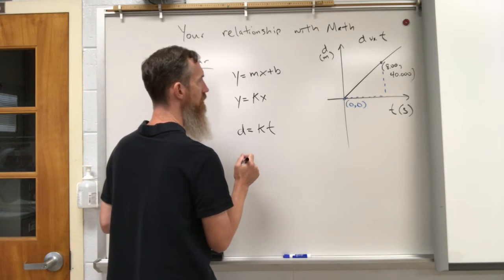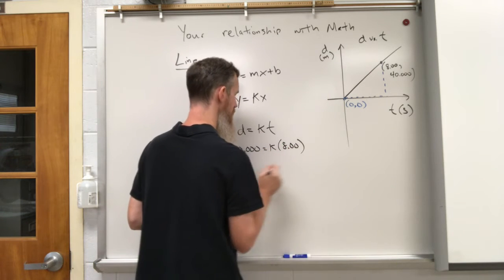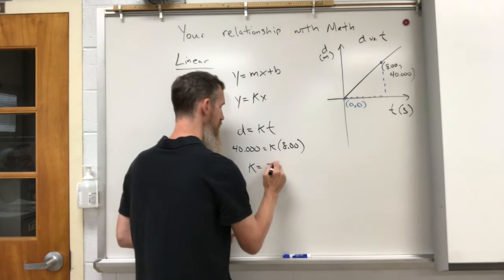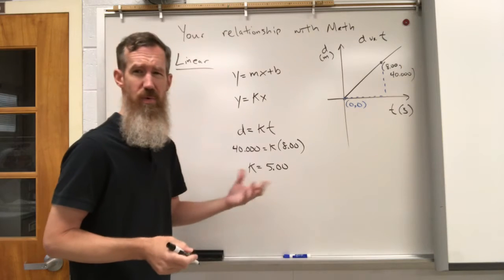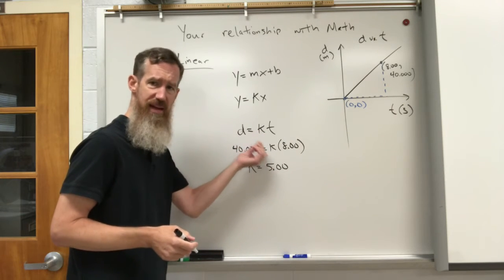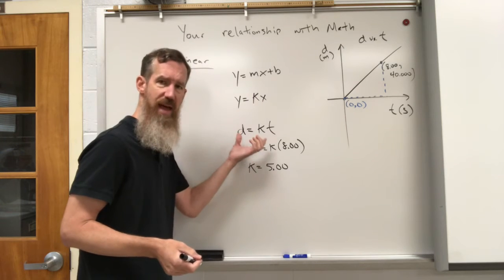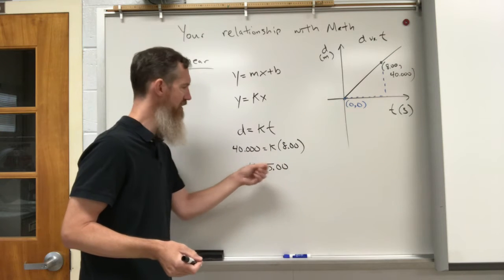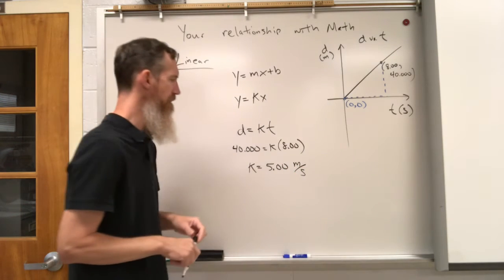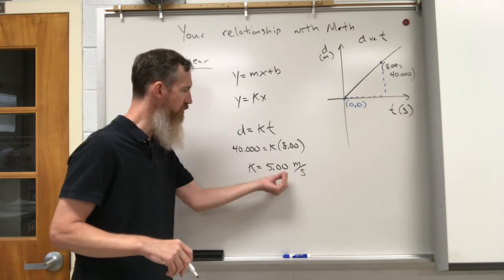Let's plug it in. We're going to put 40.000 here, k, 8.00 here, and we're going to solve this. 40 divided by 8 is 5, but I'm playing with ridiculous significant figures here, so it would be 5.00. Sig figs need to stick here, even when we're finding the constant. What also needs to stick here is units. This k value needs units to make the formula dimensionally valid. If d is in meters and t is in seconds, that's going to make this meters per second. So k is 5.00 meters per second.